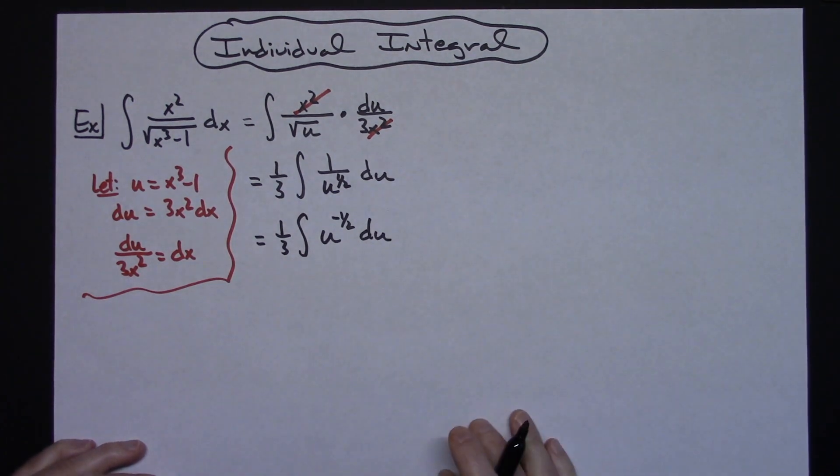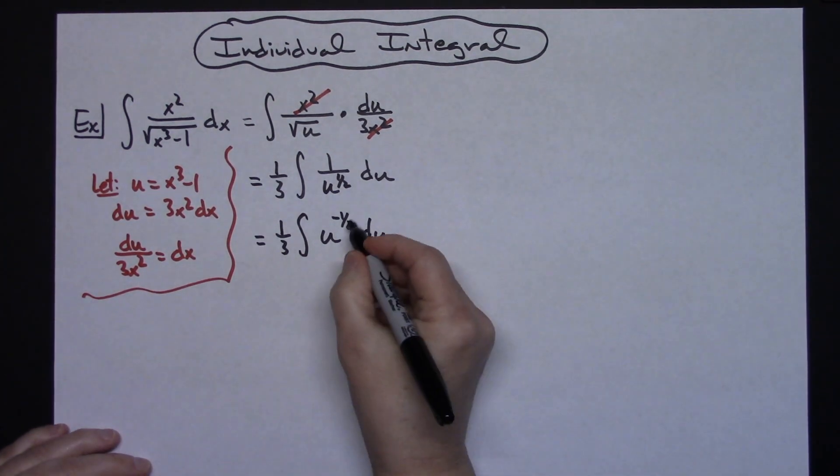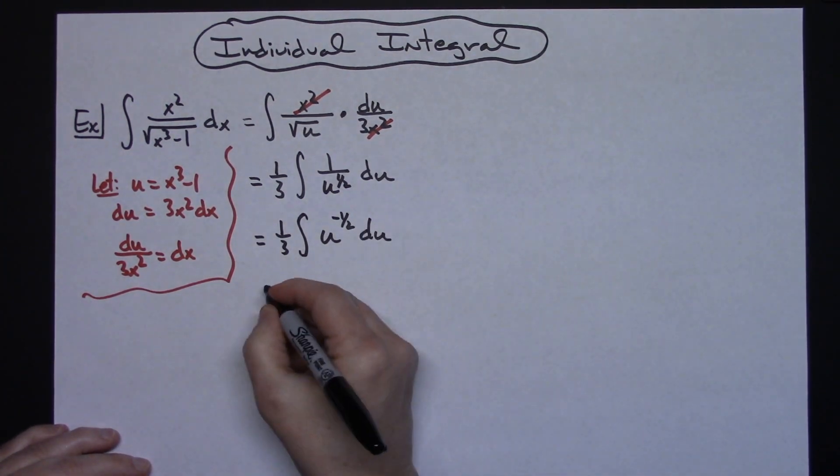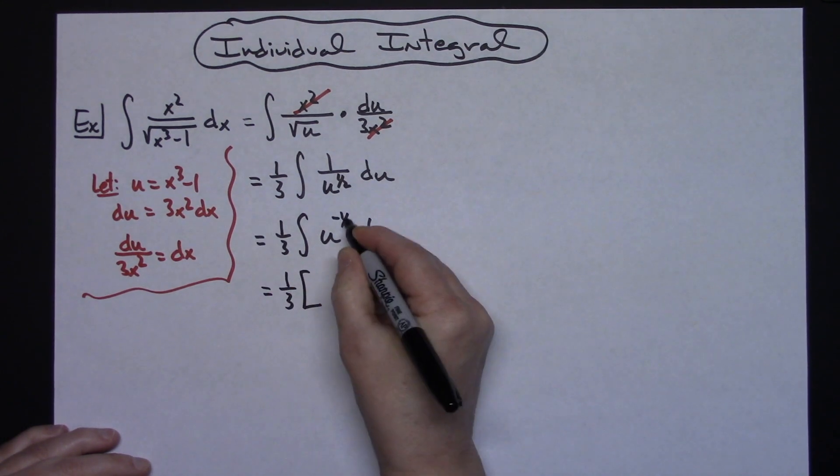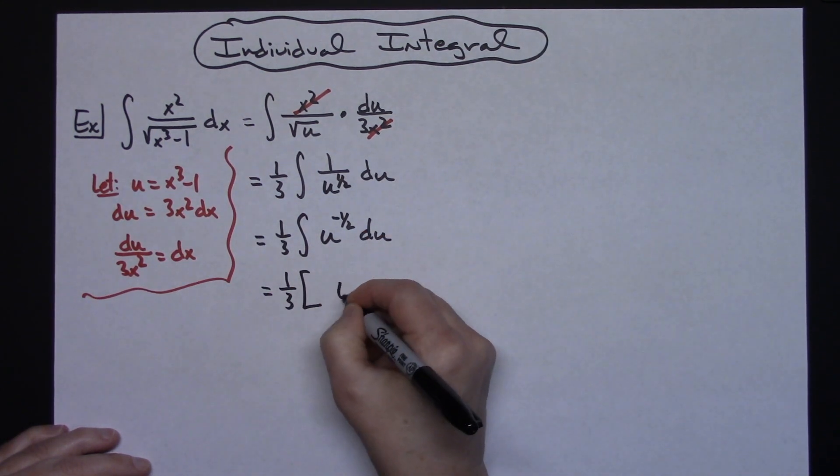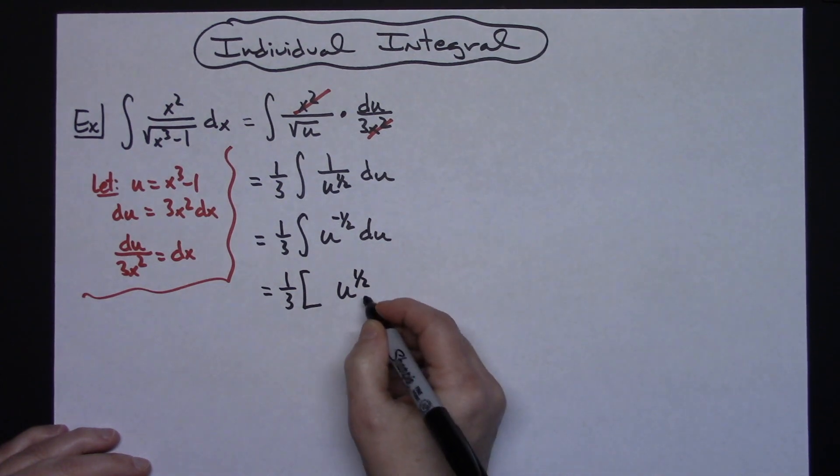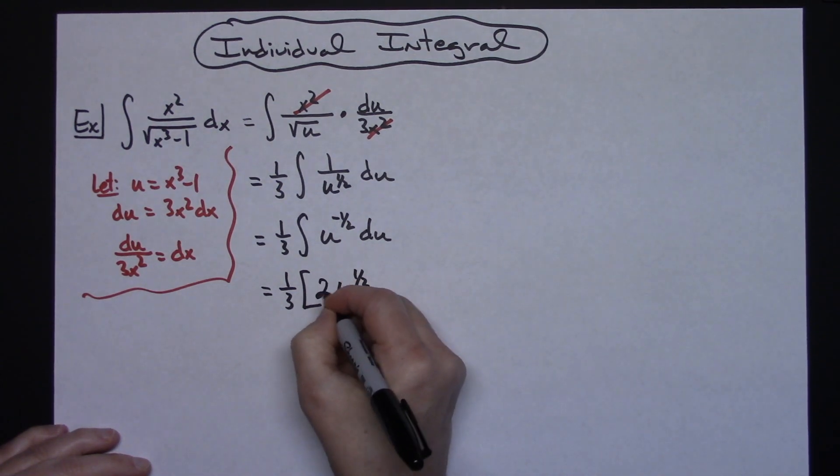We're now at a place where we can integrate this. We can add 1 to that exponent, which will give us u^(1/2). Taking the reciprocal, we'll have a 2 in front.